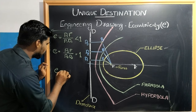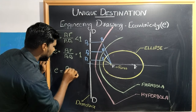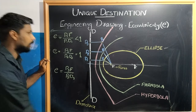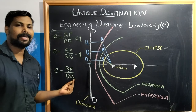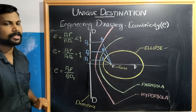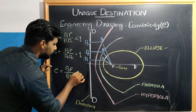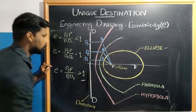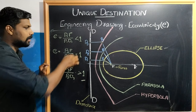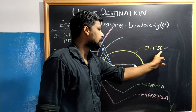The third case is Hyperbola. In a hyperbola, point P3 is marked. The distance P3F to P3D3 gives the eccentricity. This ratio P3F to P3D3 will be greater than 1. So the eccentricity of a hyperbola is greater than 1.